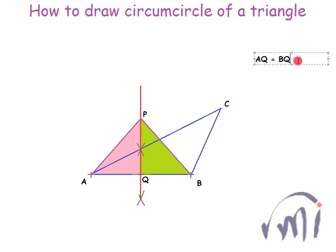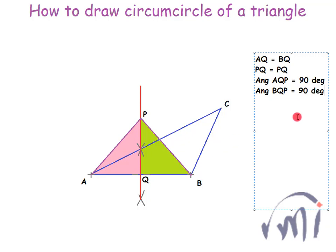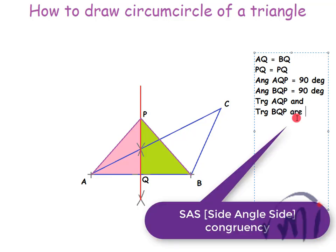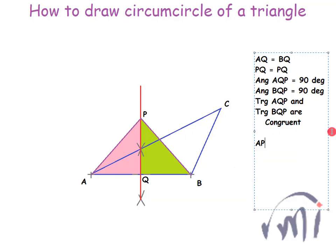So AQ equals BQ, and PQ is a common line. In both triangles, PQ equals PQ, angle AQP equals 90 degrees, and angle PQB also equals 90 degrees. That means these two triangles AQP and triangle PQB are congruent. If those two triangles are congruent, that means line AP equals line PB. P can be any point on this perpendicular bisector, and for each case AP will equal PB.